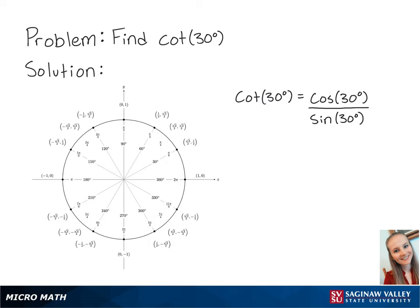Looking at the unit circle, we can see that 30 degrees lies here. Cosine correlates to the x-coordinate on the unit circle. So cosine of 30 degrees is equal to the square root of 3 over 2.